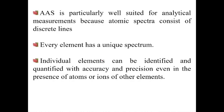This technique is well suited for analytical measurements because atomic spectra consist of discrete lines. The spectrum produced is unique for a particular atom because energy levels in any atom are quantized. Because of this, we can determine the concentration of any element even in the presence of other elements — for example, iron can be determined even when copper, manganese, and mercury are also present. Individual elements can be identified and quantified with accuracy and precision even in the presence of other atoms or ions.